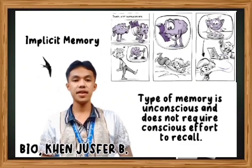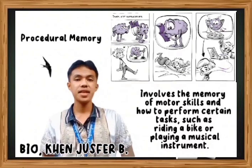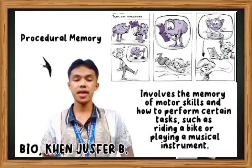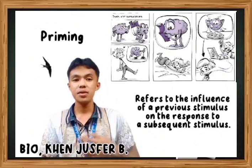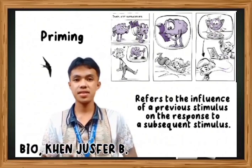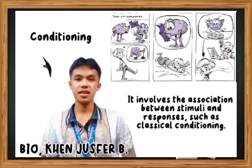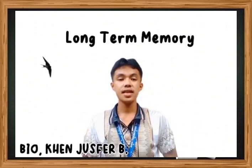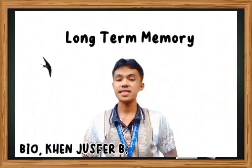The second type is implicit memory, also known as non-declarative memory. This type is unconscious and does not require conscious effort to recall. It includes procedural memory — the memory of motor skills and how to perform certain tasks such as riding a bike or playing a musical instrument — as well as priming, which refers to the influence of a previous stimulus on response to a subsequent one, and conditioning, which involves associations between stimuli and responses. Long-term memory is believed to involve structural and chemical changes in the brain, particularly in the connections between neurons.